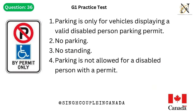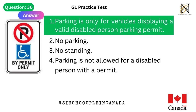Question 36. This traffic sign means: 1. Parking is only for vehicles displaying a valid disabled person parking permit. 2. No parking. 3. No standing. 4. Parking is not allowed for a disabled person with a permit. Answer is 1. Parking is only for vehicles displaying a valid disabled person parking permit.